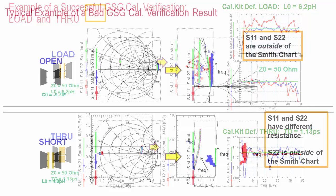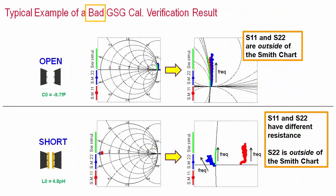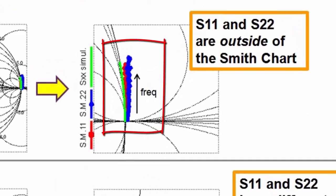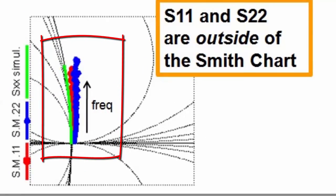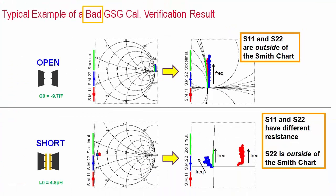Because bad examples are always the best method to learn and remember topics, I want to show you here an example of a not-so-successful GSG probe verification. The phases of S11 and S22 are correct, but the magnitudes become larger than 1 with increasing frequency, which means amplification. And this is physically impossible.